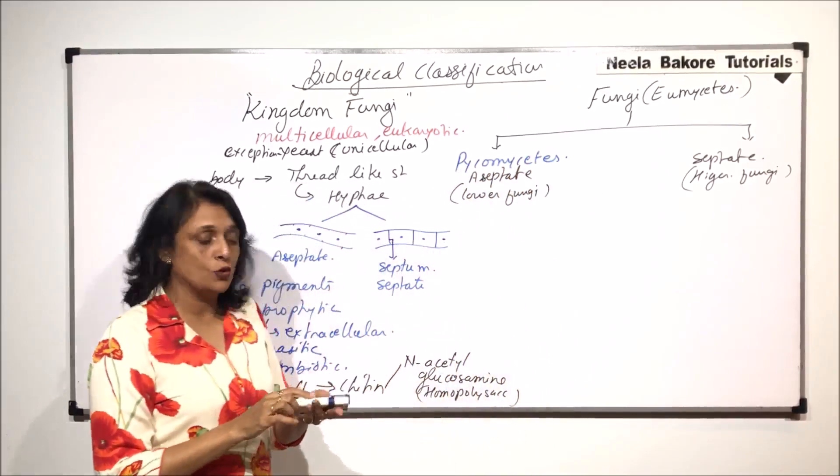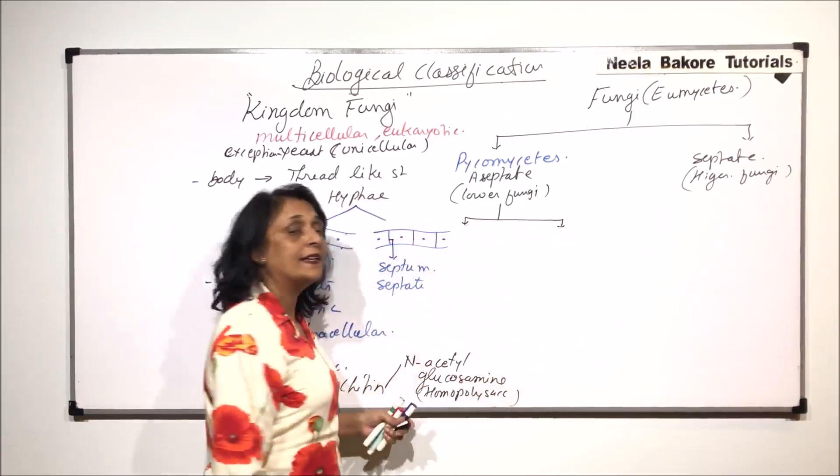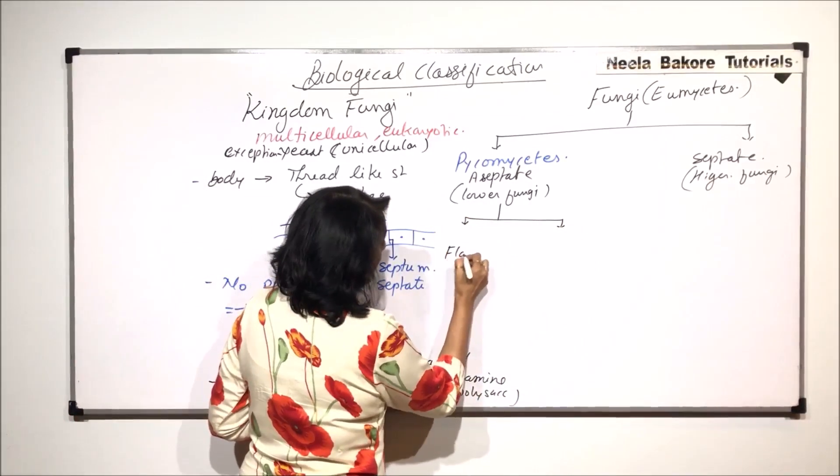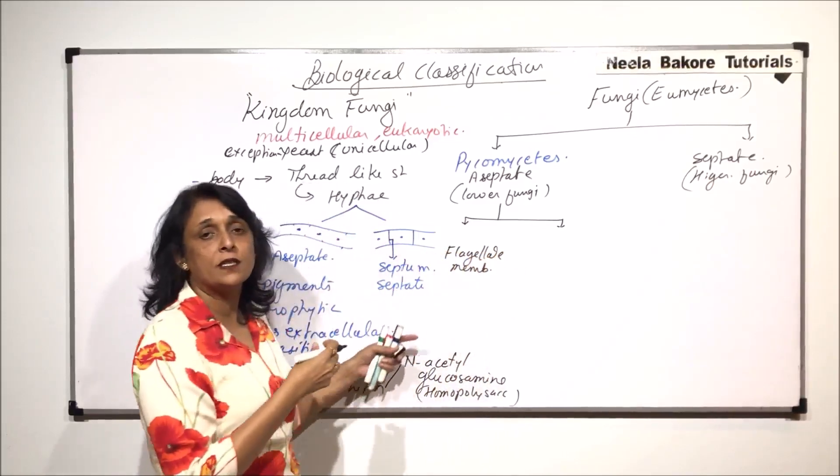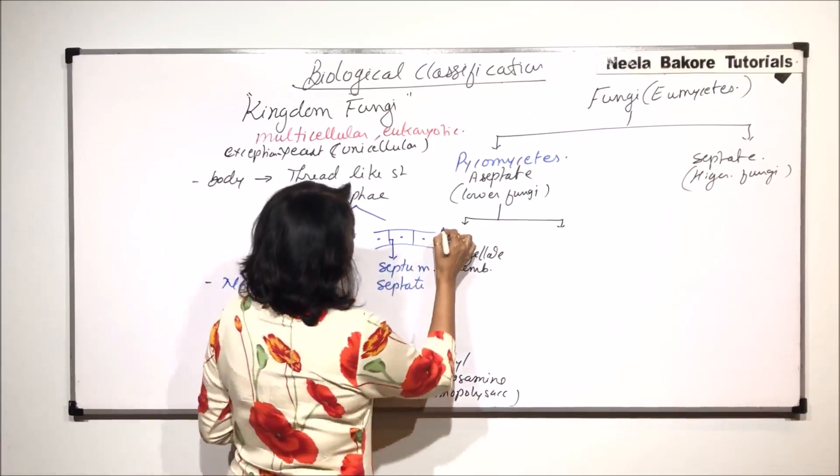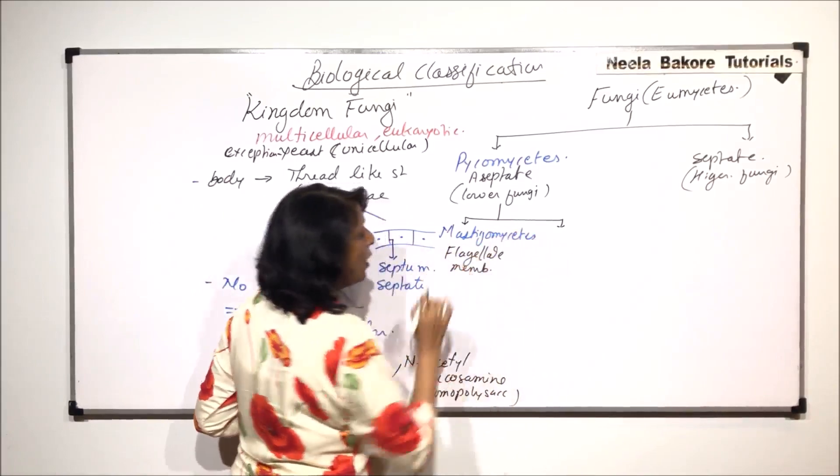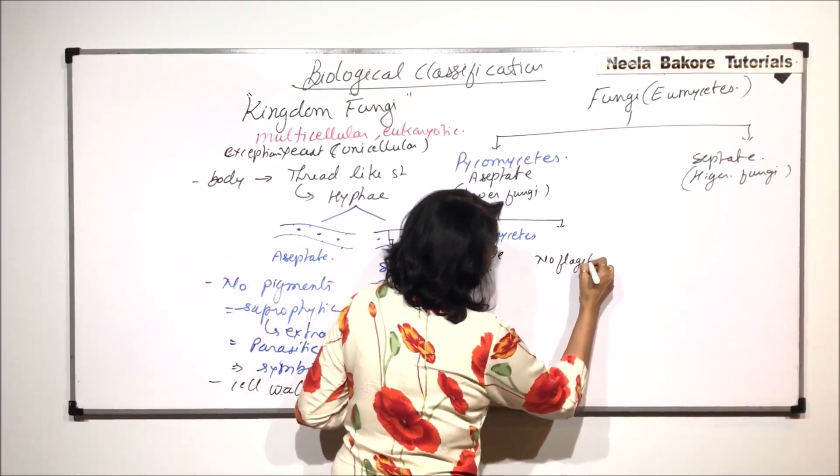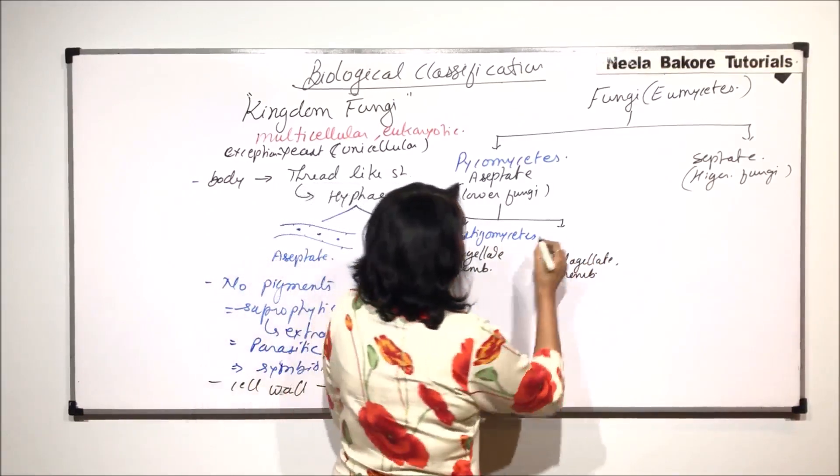Now this phycomycetes group is further divided. And this division is on the basis of whether they have flagellate members or not. So the group which has flagellate members, any member, it could be just a gamete or a spore or anything. If they have flagellate member, then it is called mastigomycetes. And if there is no flagellate member, then the group is known as zygomycetes.